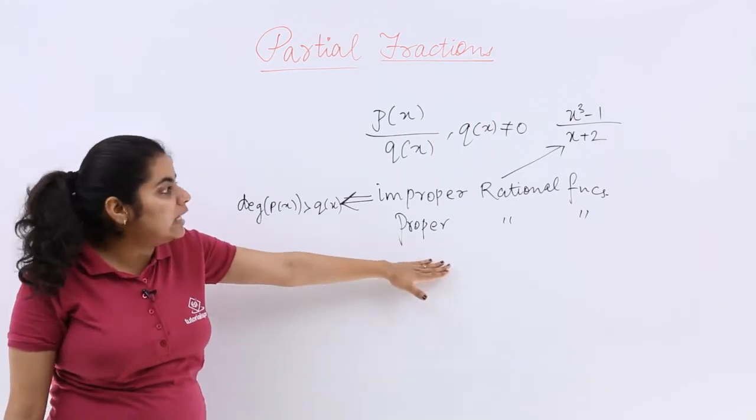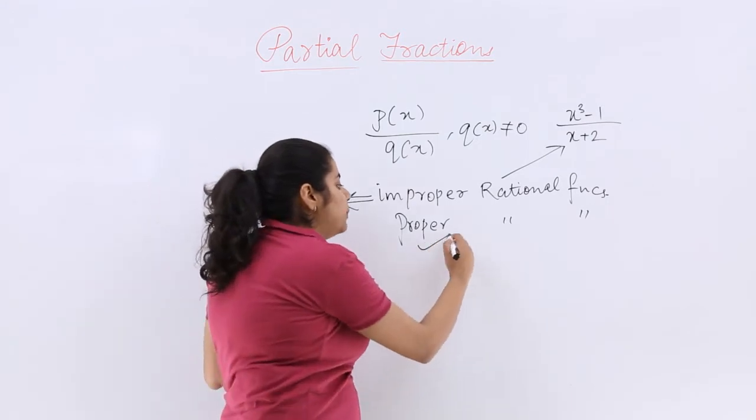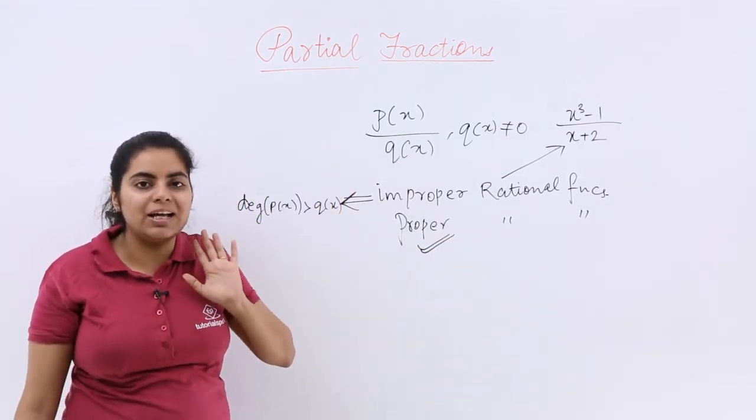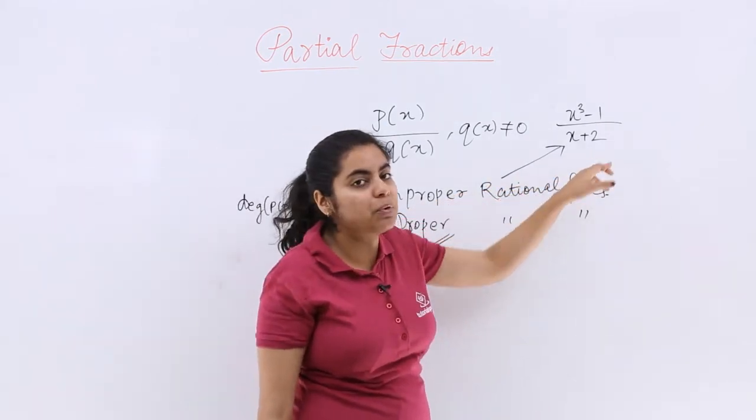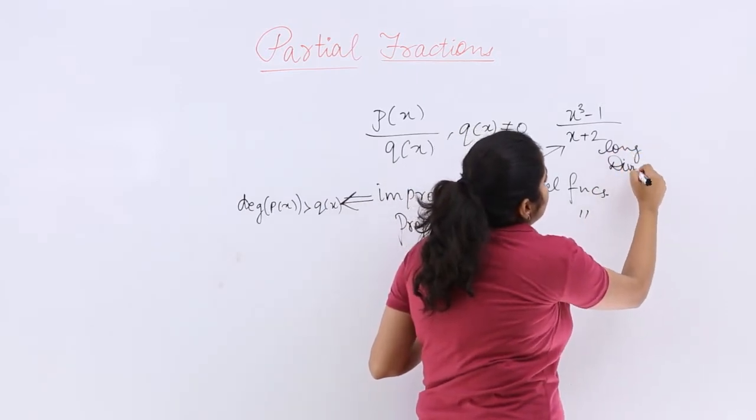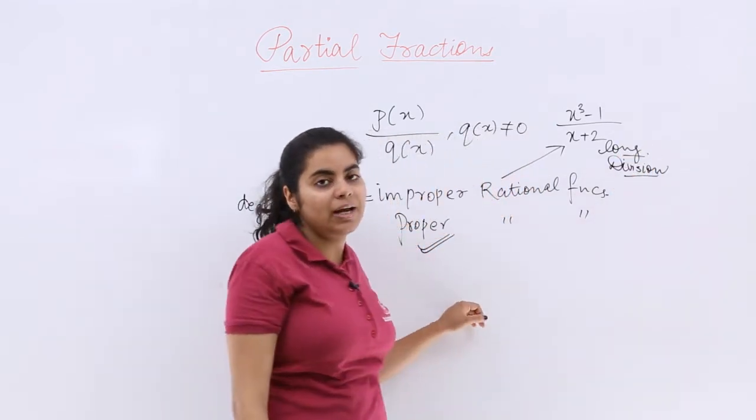But if the degree is not greater of the numerator then it would be a proper rational function case. Now improper rational function you know already that we have done the integration of these type of functions by long division. By division method you have already done. So long division method would go for improper rational functions.